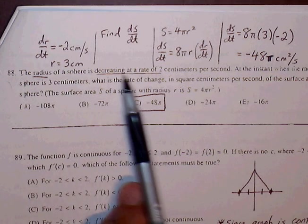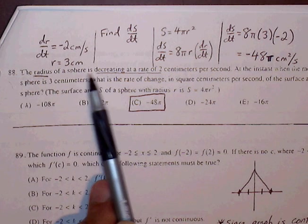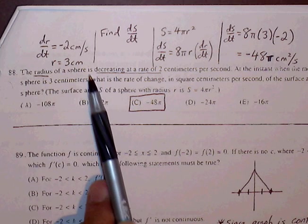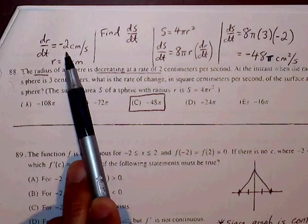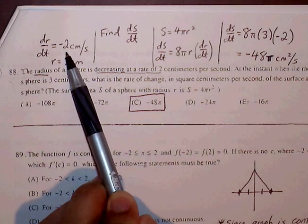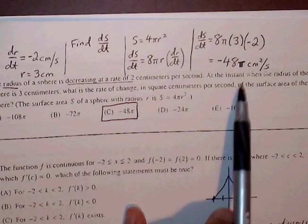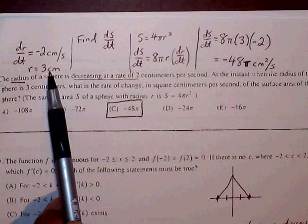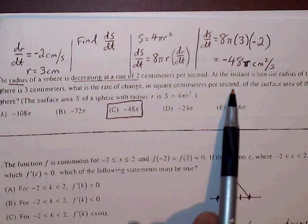So radius of a sphere, we can represent that as R, but it's decreasing, so we know that's going to be a rate. So we can say dr/dt is, and we see decreasing, so we're going to make that a negative value, negative 2 centimeters per second. At the instance when the radius of the sphere is 3 centimeters, so we're going to mark that down, R equals 3 centimeters, what is the rate of change of the surface area?